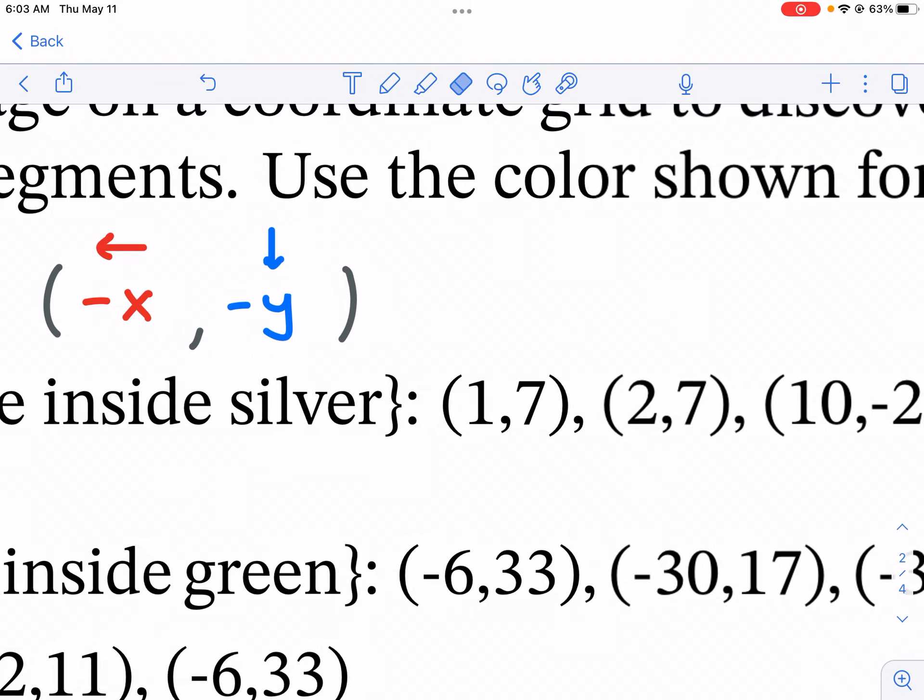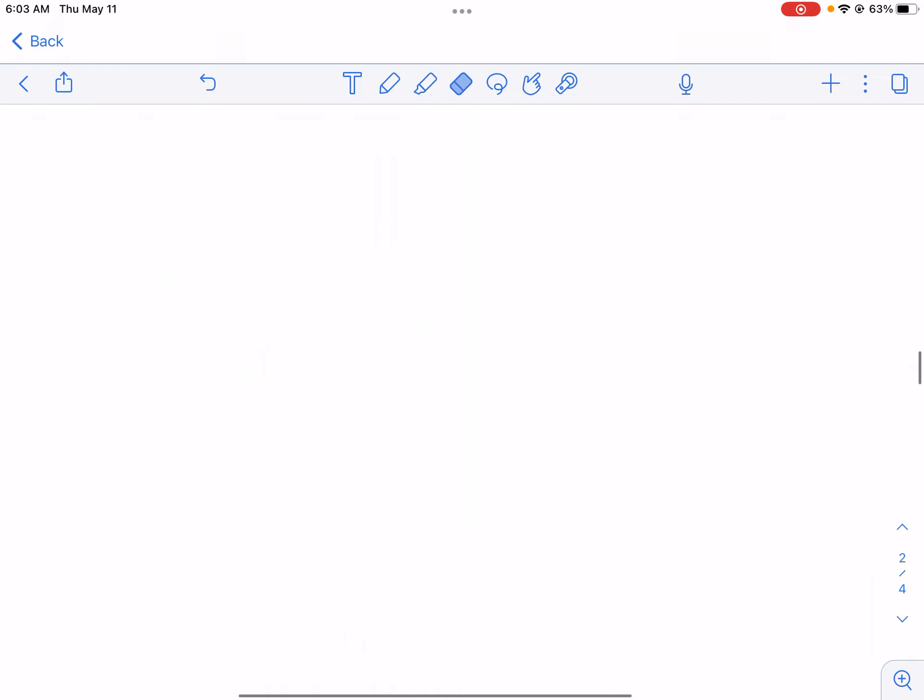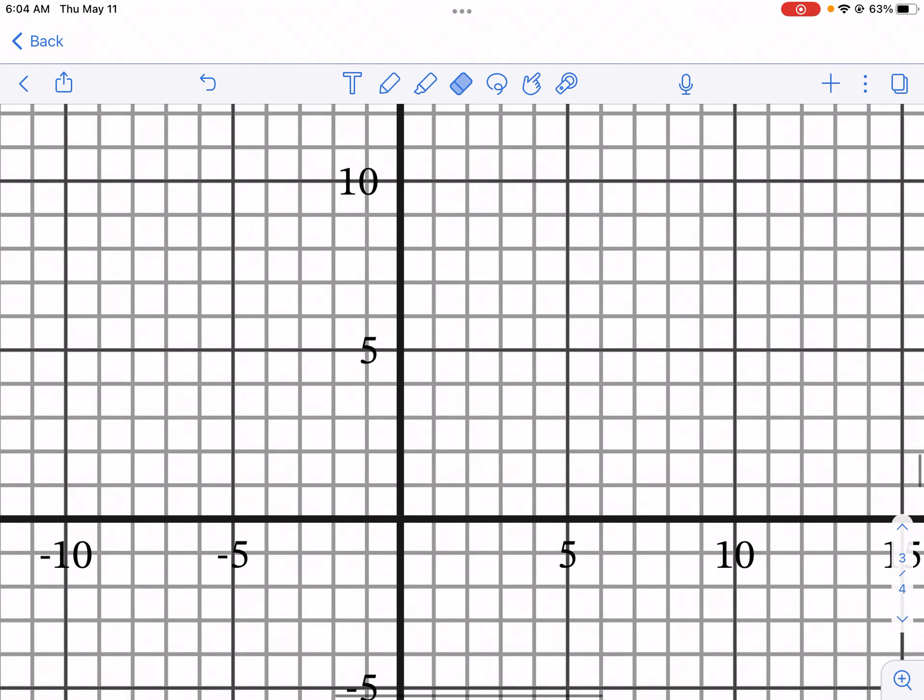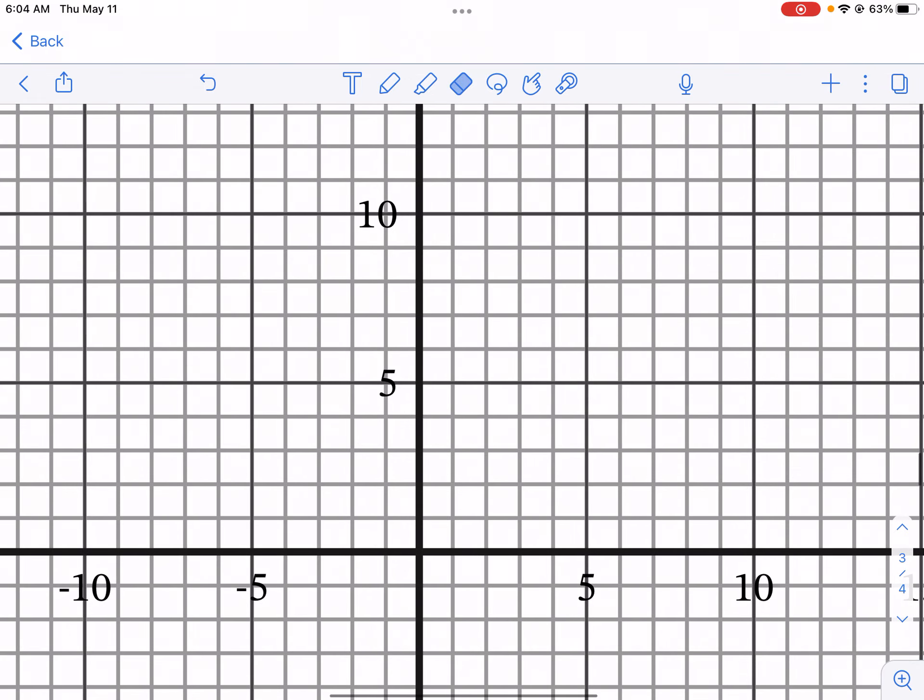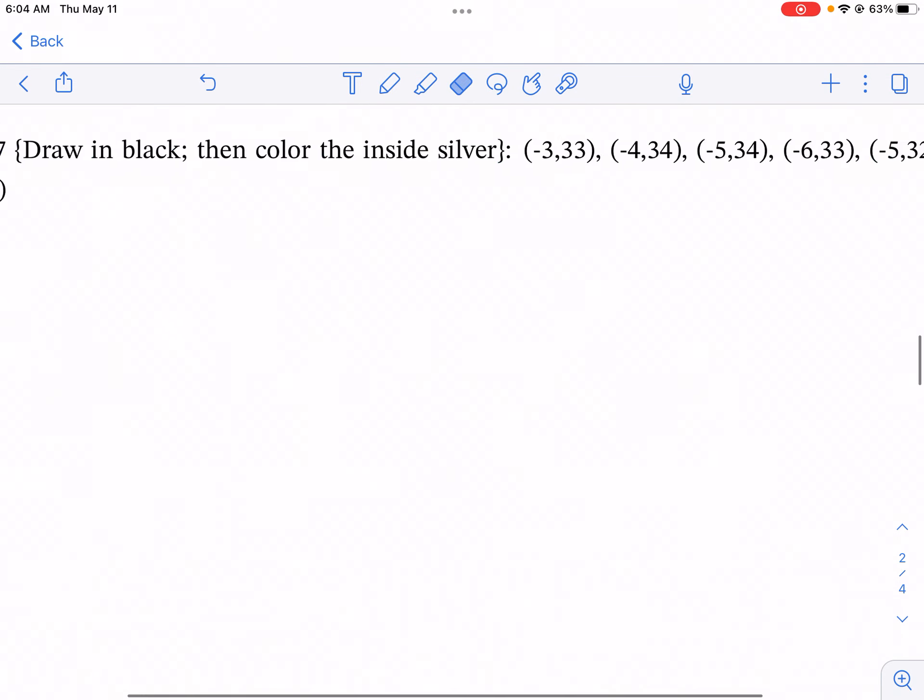So our first point that we're going to plot here is (1,7). We're going to scroll down to our Cartesian plane here. It's going to be located right around the middle of your screen right here. So we're going to move one in the X direction and then seven up. So we're going to place a dot right there.